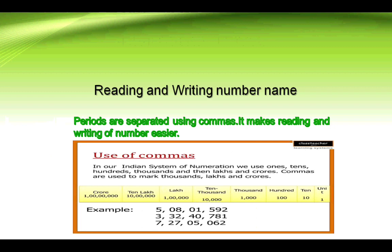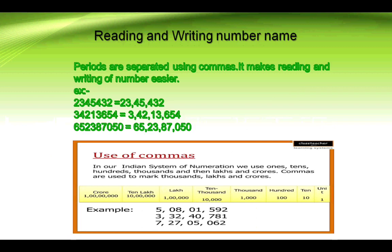After seeing a large number, most of you may feel it is really difficult to read and write the number names. But I will say no — you can easily read and write any number by using commas. In our Indian system of numeration, we use ones, tens, hundreds, thousands, lakhs, and crores. Commas are used to mark thousands, lakhs, and crores. In the given number, you can see the commas separating the periods.